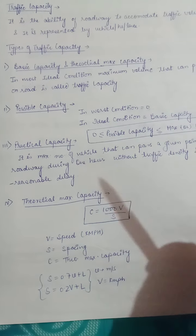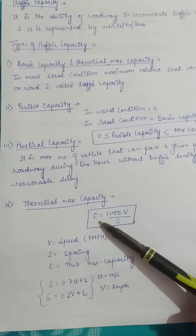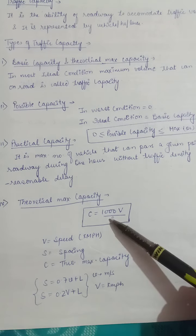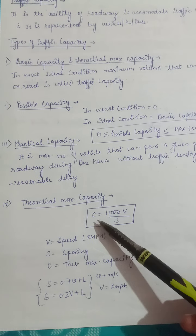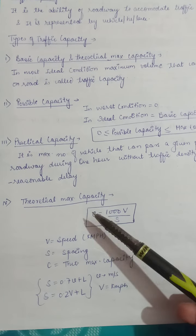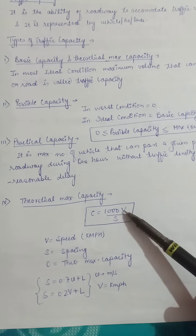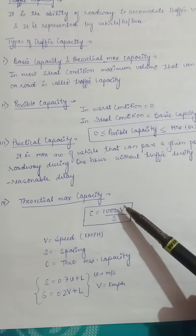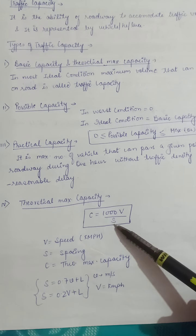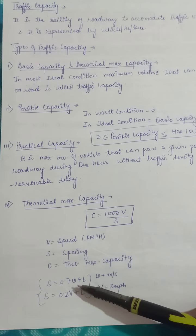The formula to calculate theoretical maximum capacity is: C = 1000V/S. This formula is very important. Here, C is the theoretical maximum capacity that we need to calculate, V is the speed given in km per hour, and S is the spacing — also called space headway.